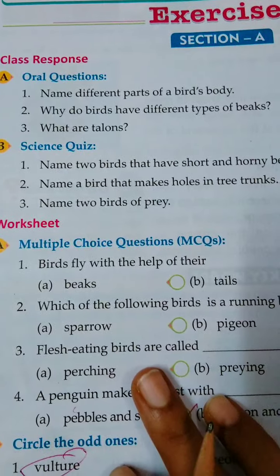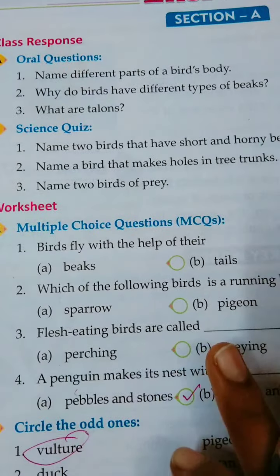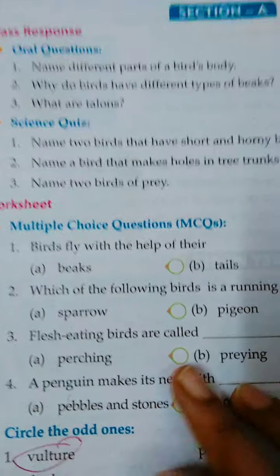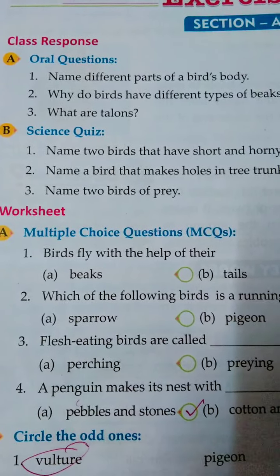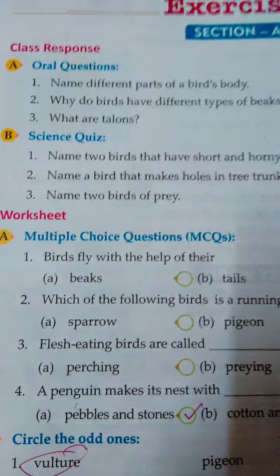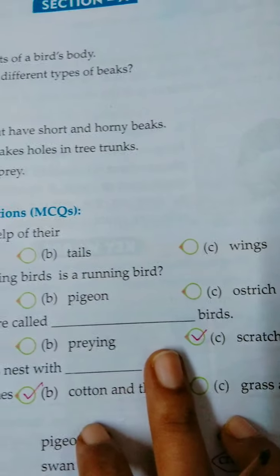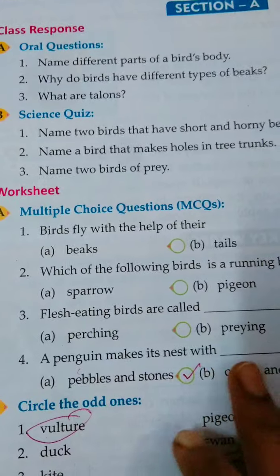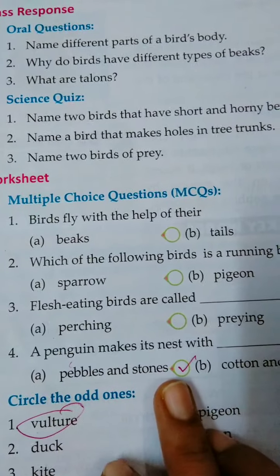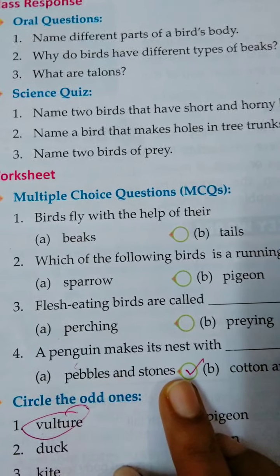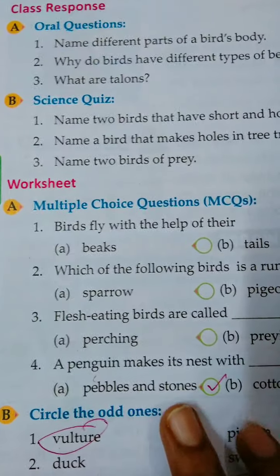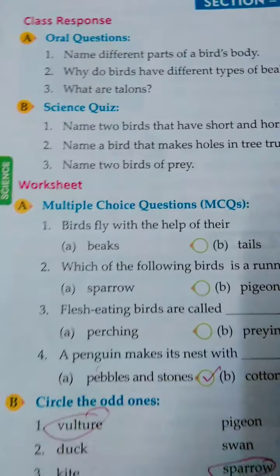Flesh-eating birds are called birds of prey. Then: penguin makes its nest with pebbles and stones. You can see penguins in cold places — that is why they use pebbles and stones to make their nest.